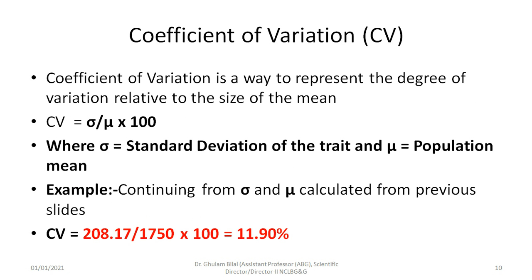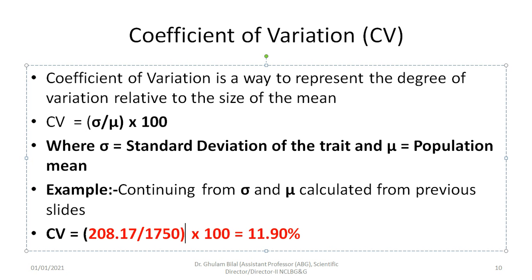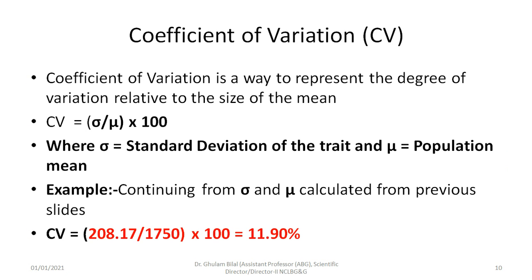Another important parameter is coefficient of variation. It is a way to represent the degree of variation relative to the size of the mean, and it is useful in research studies. Its formula is: CV equals (sigma divided by mu) multiplied by 100, that is, standard deviation divided by population mean, multiplied by 100. Continuing from the previous data, standard deviation is 208.17 and mean is 1750, so CV equals (208.17 divided by 1750) multiplied by 100, which comes out to approximately 11.90 percent for lactation milk yield.